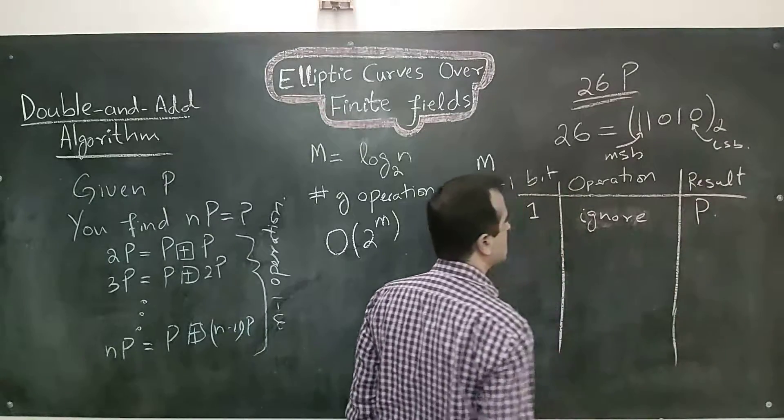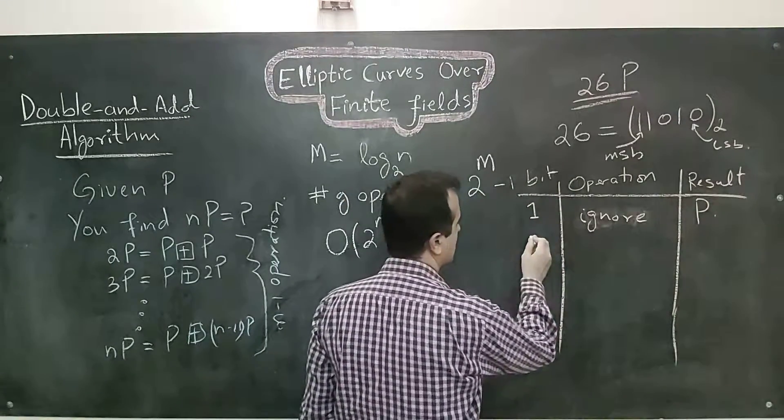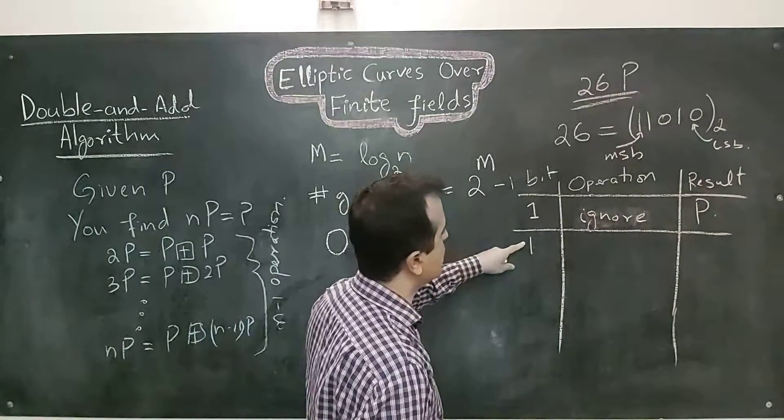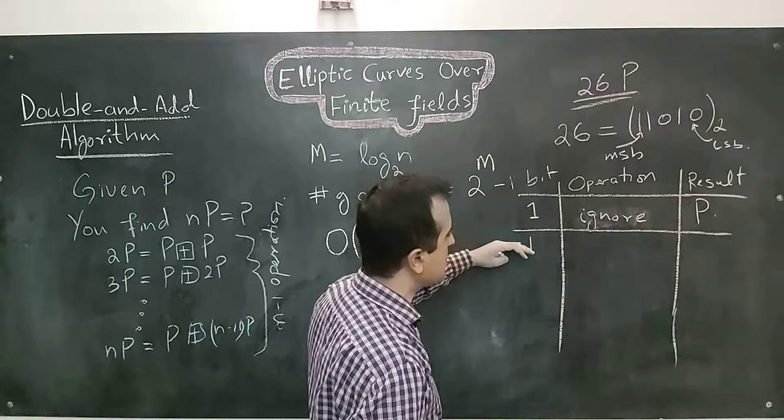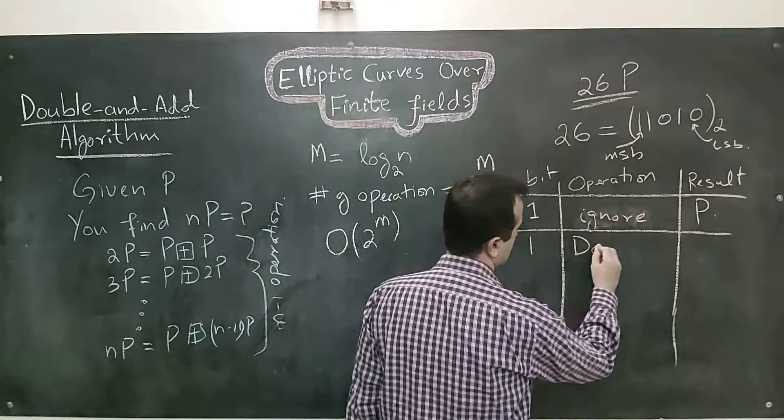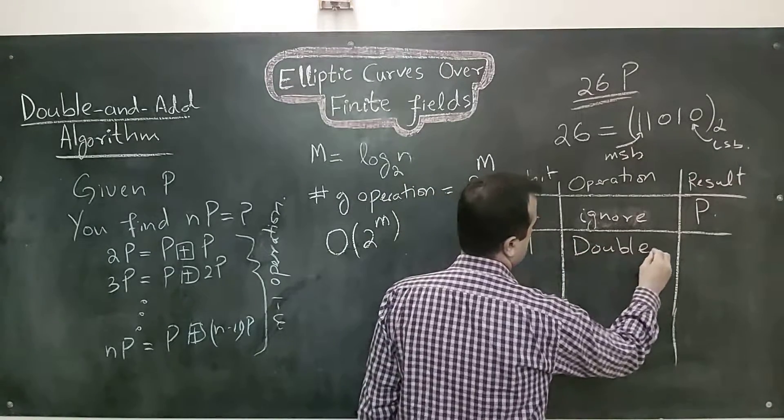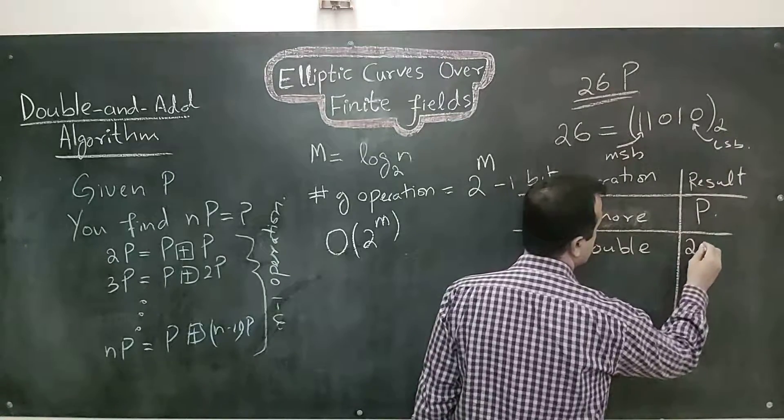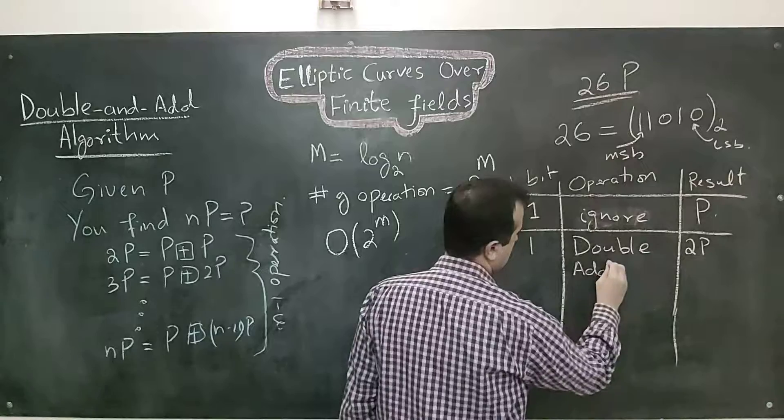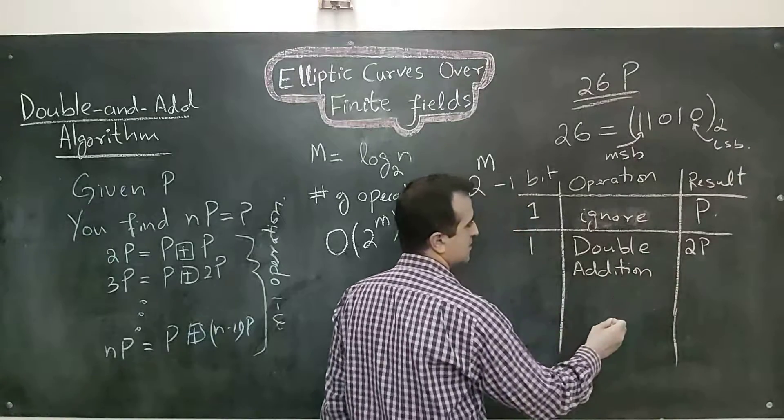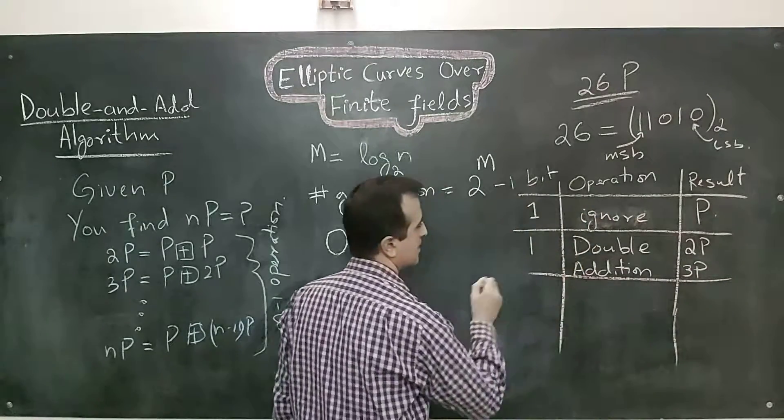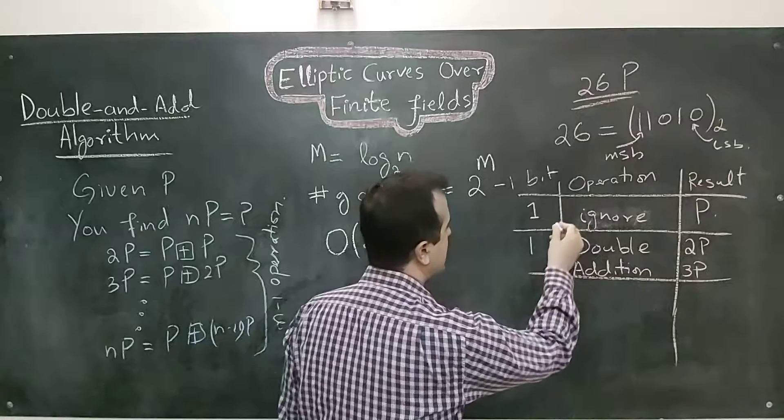So I still have P. The second bit is also 1, and if the bit is 1, then I will perform 2 operations: one is point doubling and the other one is point addition. So I will perform double. Double will make P into 2P. Then I will do point addition. Addition implies that I will add P in the result, so 2P plus P is 3P.